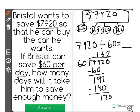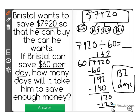Which means two times, and that will leave me with no remainder. And it took 132 days for Bristol to save the amount of money he needs to buy his car.